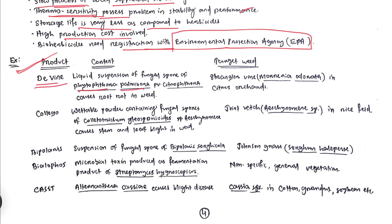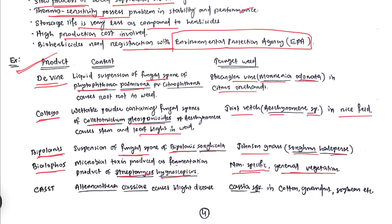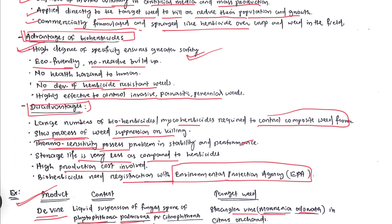Examples of bio-herbicides: DeVine is extracted from Phytophthora palmivora and controls the strangler vine Morrenia odorata in citrus orchards. Collego is from Colletotrichum gloeosporioides and causes leaf blight, controlling jointvetch or Aeschynomene species in rice fields. BioMal is a suspension of fungal spores of Bipolaris sorghicola that controls Johnson grass or Sorghum halepense. Biolophos is a microbial toxin from Streptomyces hygroscopicus, non-specific, applied to general vegetation. CASST is from Alternaria cassiae, causing blight disease, controlling Cassia species in cotton, groundnut, and soybean.